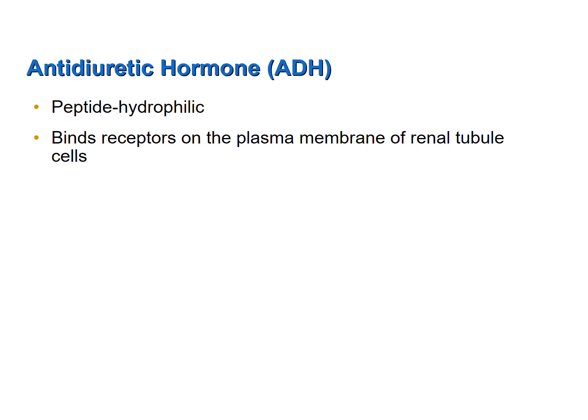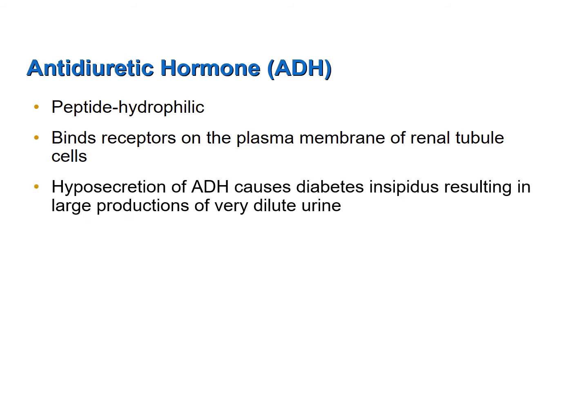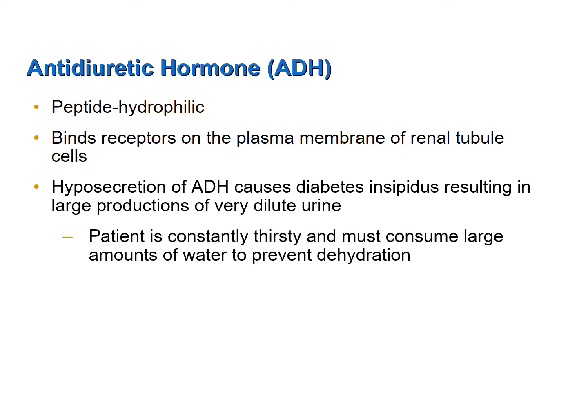Antidiuretic hormone is a peptide hormone and is therefore hydrophilic, binding receptors on the plasma membrane of its target cells. In some individuals, ADH production is below normal — a condition called hyposecretion of ADH — which causes diabetes insipidus. This is not diabetes associated with blood sugar levels. Because of the below-normal secretion of ADH, the individual produces large amounts of very dilute urine, sometimes as much as 10 liters per day. The patient is constantly thirsty and must consume large amounts of water just to prevent dehydration.